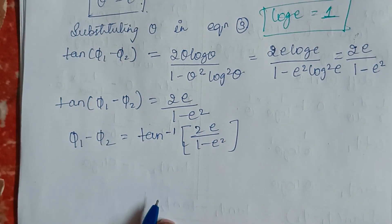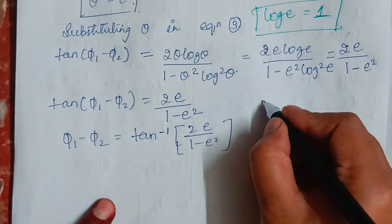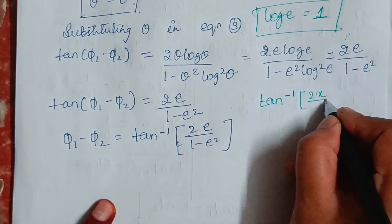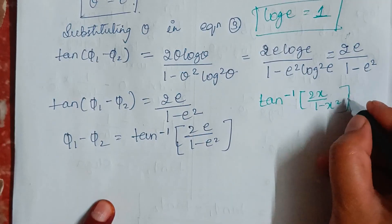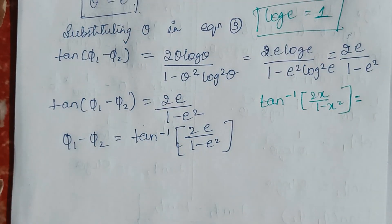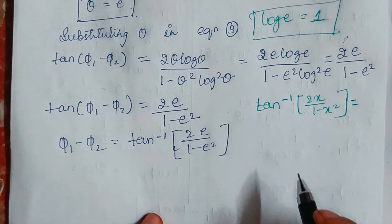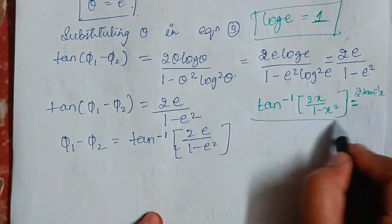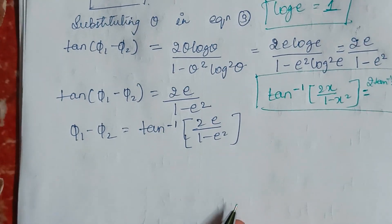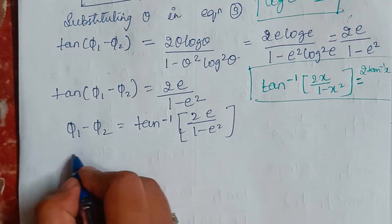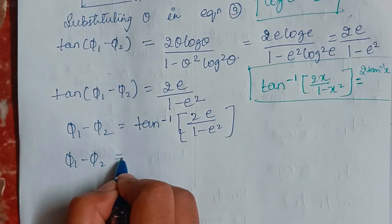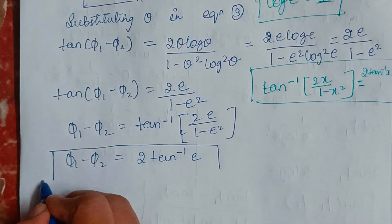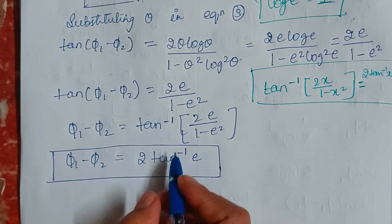Using the identity tan⁻¹(2x / (1 − x²)) = 2 tan⁻¹(x), we can write φ₁ − φ₂ = 2 tan⁻¹(e). This is the angle between the two curves.